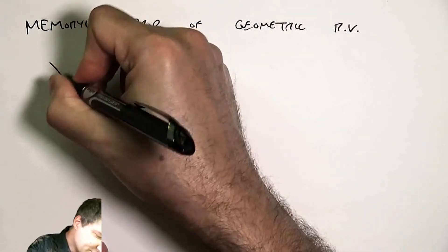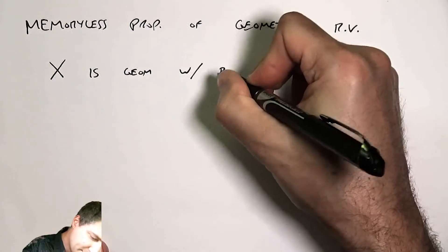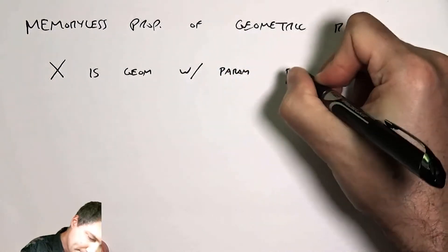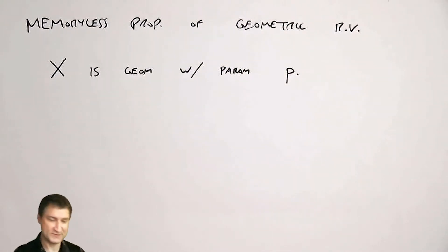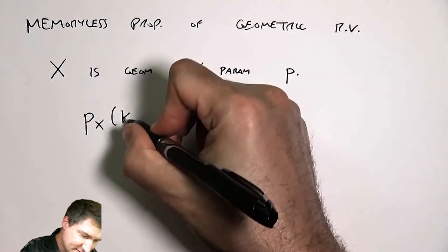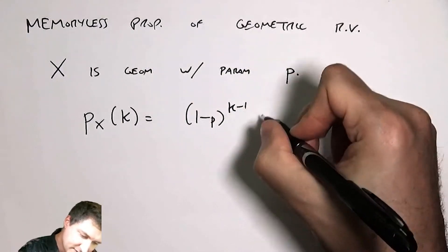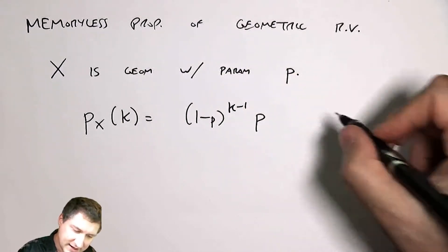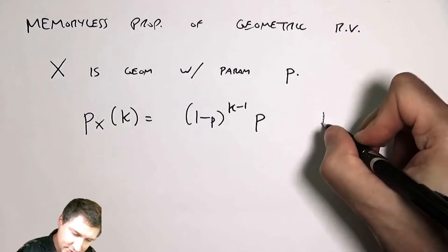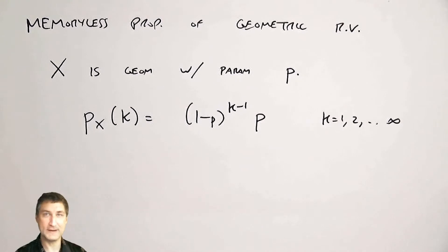So let's suppose that X is geometric random variable with parameter p, where p is the probability of success. We know what the PMF of this random variable is. It's like saying I fail k minus one times and then I succeed on the kth try. And so k could range from one to infinity.